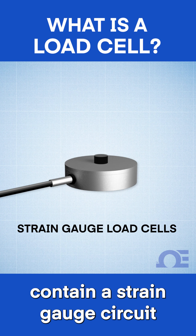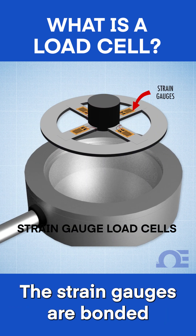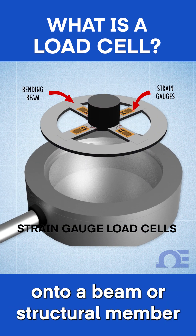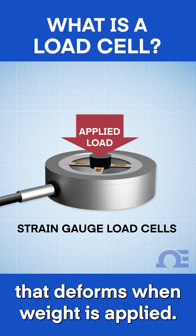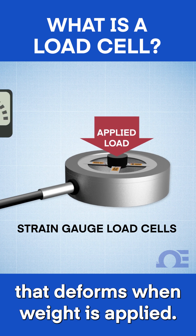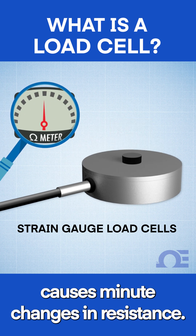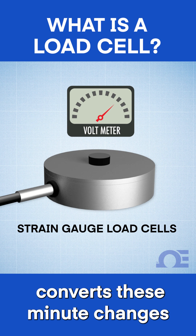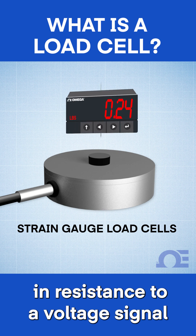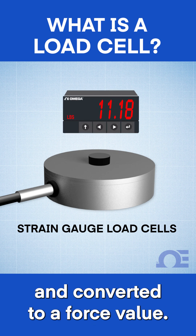Strain gauge load cells contain a strain gauge circuit known as a Wheatstone bridge. The strain gauges are bonded onto a beam or structural member that deforms when weight is applied. The deformation of the strain gauges causes minute changes in resistance. The Wheatstone bridge circuit converts these minute changes in resistance to a voltage signal that can be accurately read and converted to a force value.